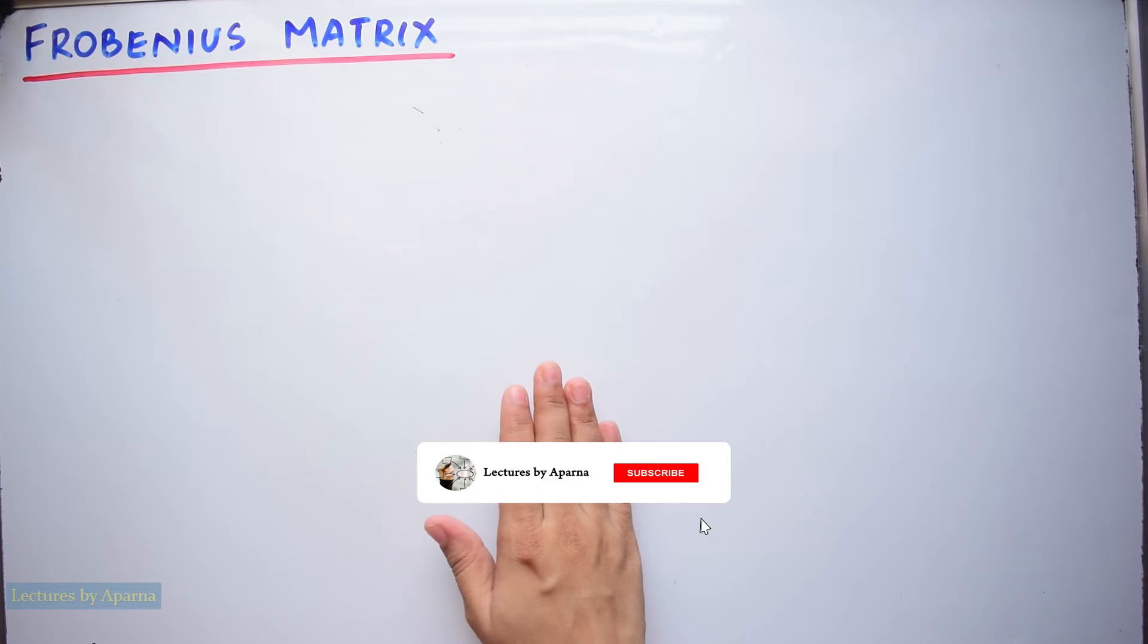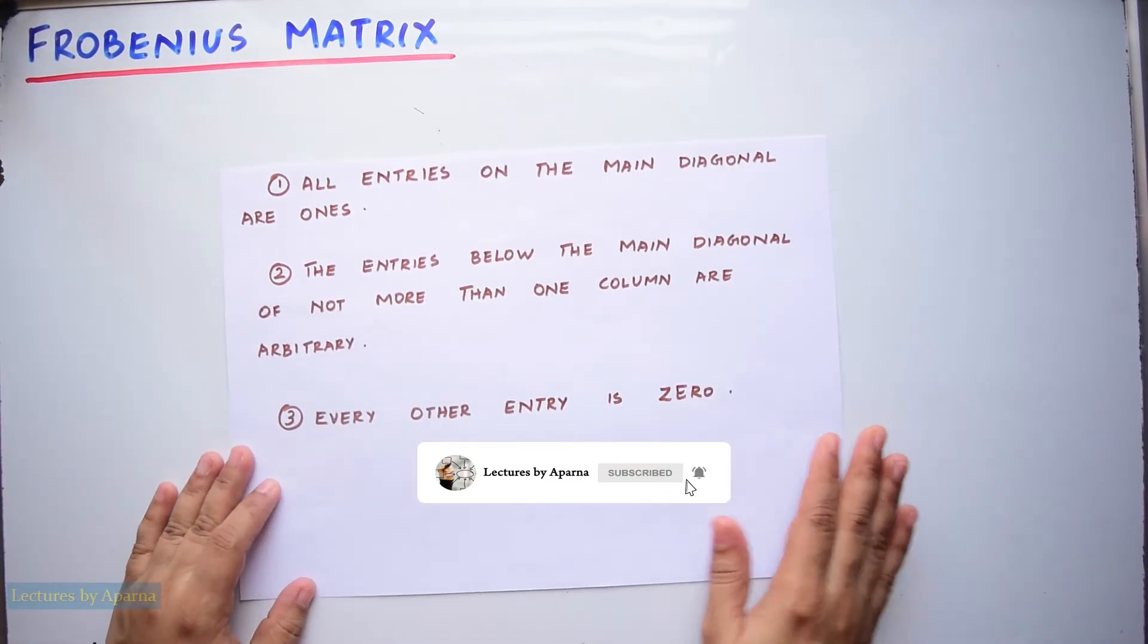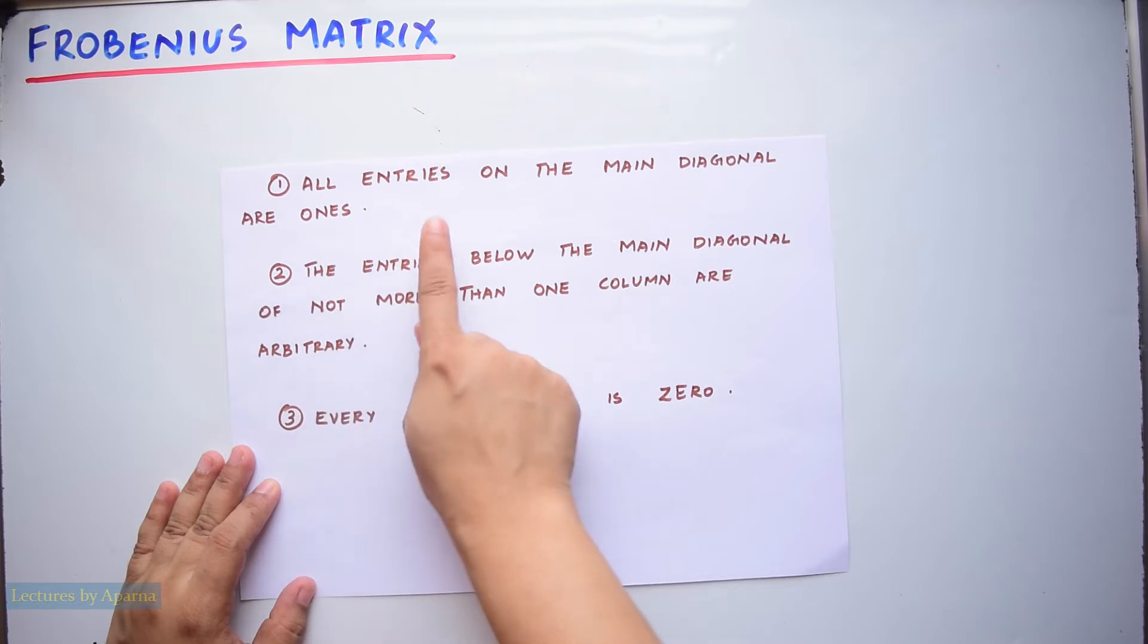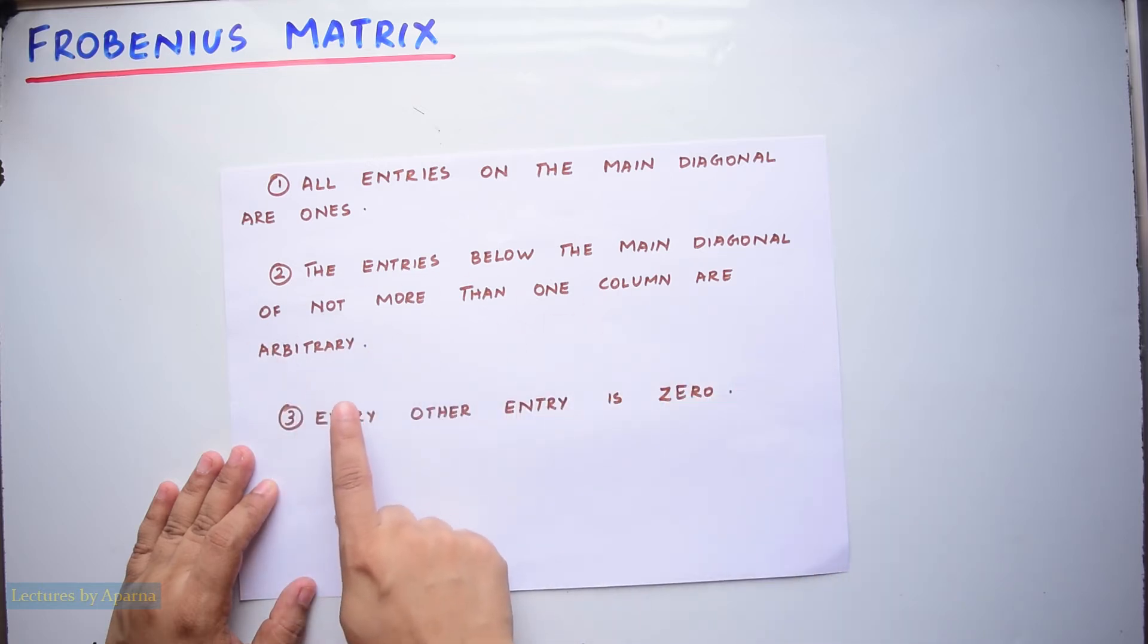A square matrix is a Frobenius matrix if it follows three properties. All entries on the main diagonal are ones. The entries below the main diagonal of not more than one column are arbitrary. Every other entry is zero.